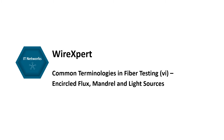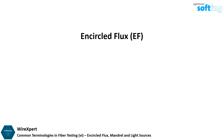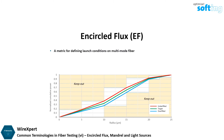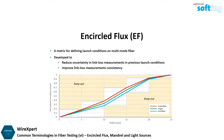In this video, we are going to explain what is encircled flux, mandrel, and the different kinds of light sources. Encircled flux, or EF, is a metric for defining launch conditions on multimode fiber. It was developed to reduce the uncertainty in link loss measurements in previous launch conditions, improving link loss measurement consistency.